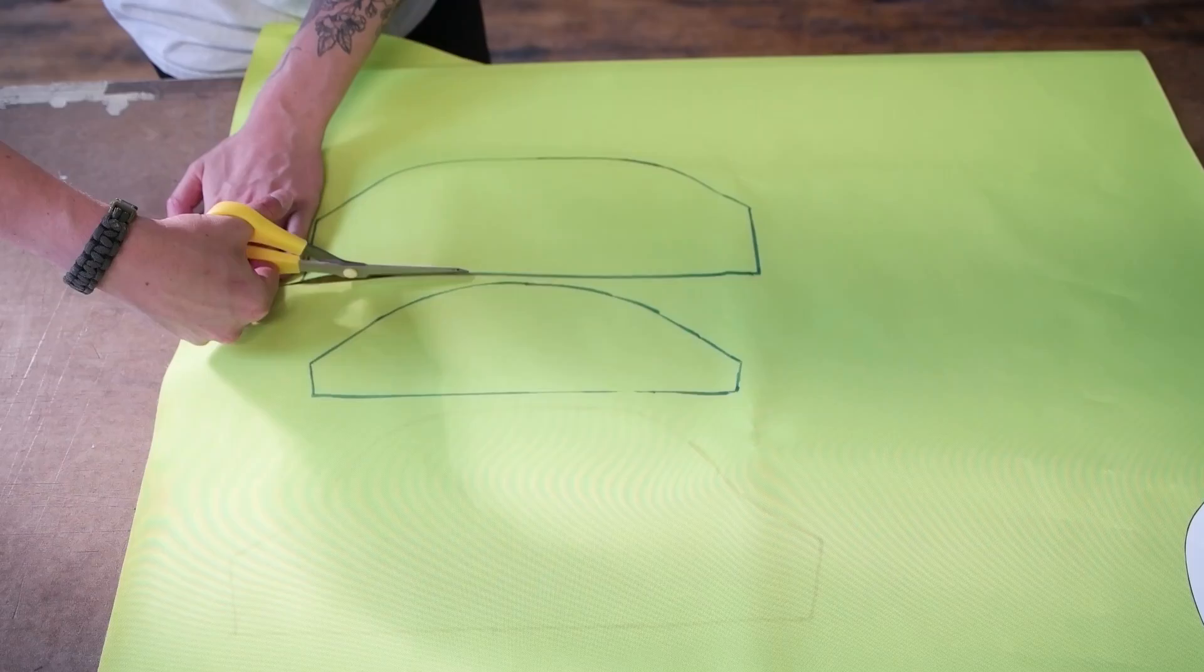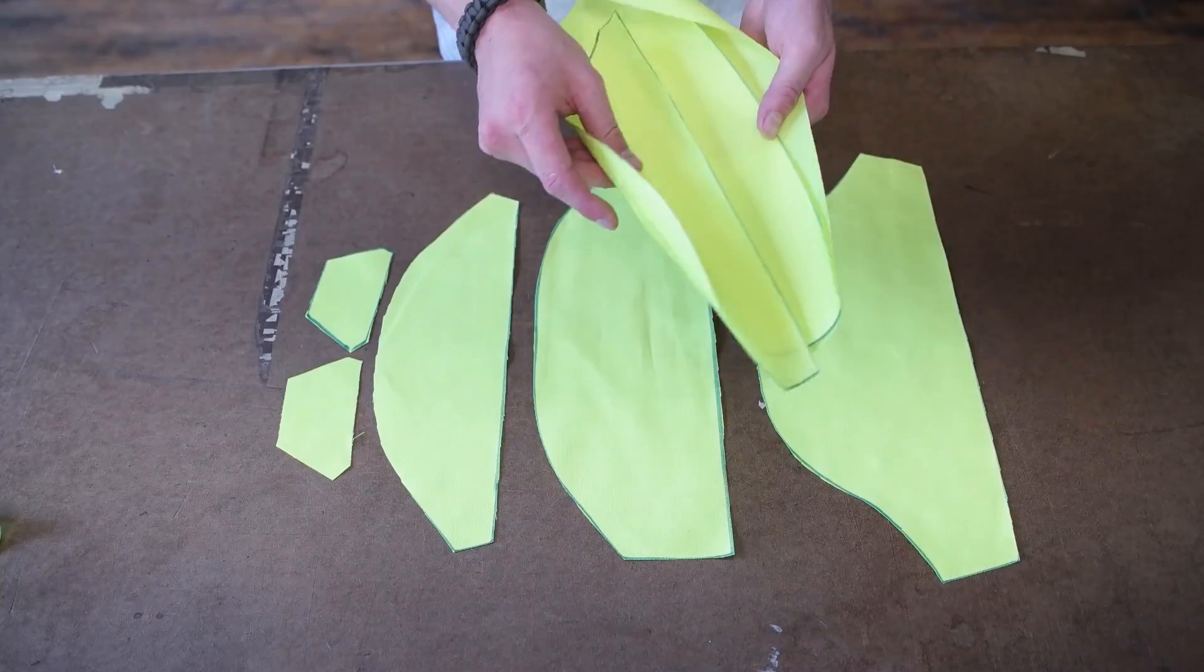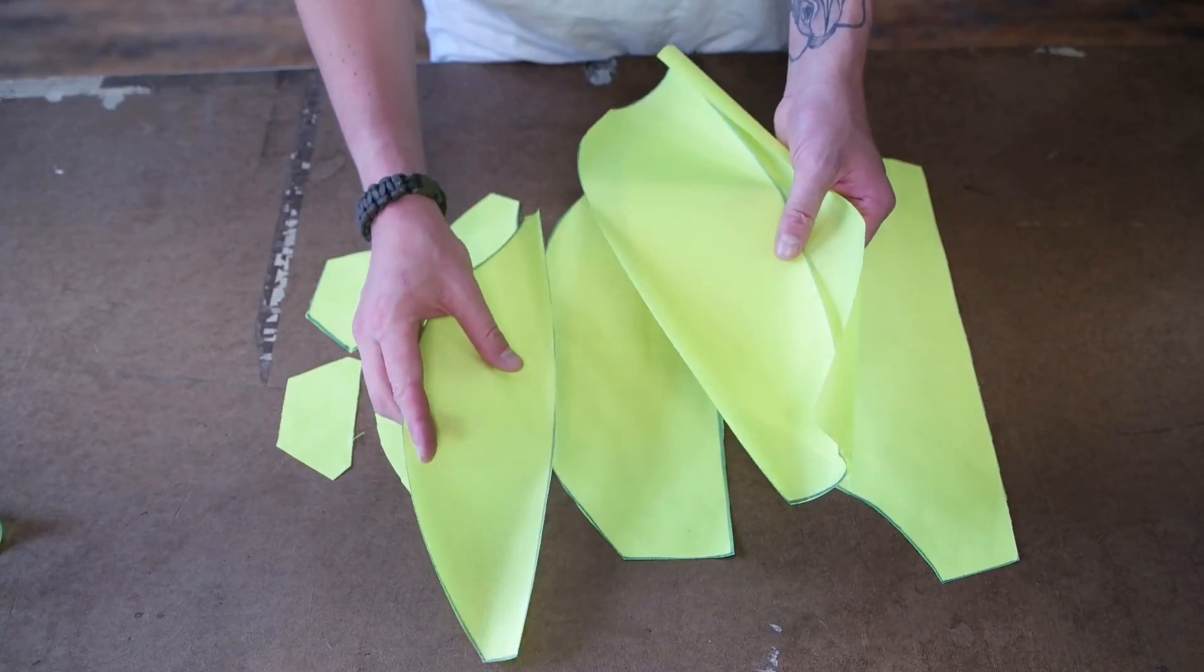Getting started, go ahead and trace and cut out your pattern. You're gonna want to end up with two of each panel: one for the lining and one for the outer shell.